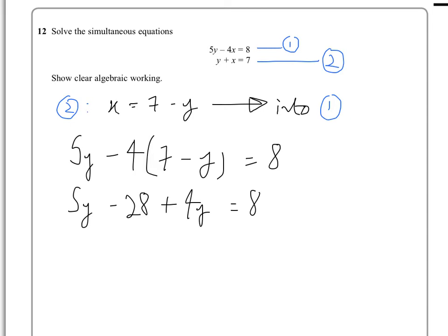when we rearrange that we've got 5y plus 4y gives us 9y and that equals 8 plus 28 as the 28 goes on the other side and that's 36 therefore y would be equal to 36 over 9 which is 4.